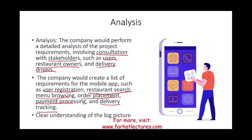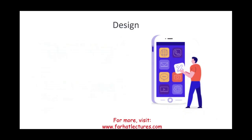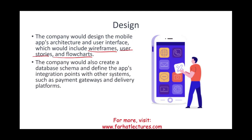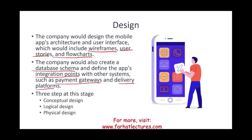Once we have the big picture, we design it — put it on paper. The company designs the mobile app architecture and user interface, including wireframes, user stories, and flowcharts. The company also creates a database schema and defines the app's integration points with other systems, such as payment gateways and delivery platforms. The design stage involves conceptual design, logical design, and physical design.